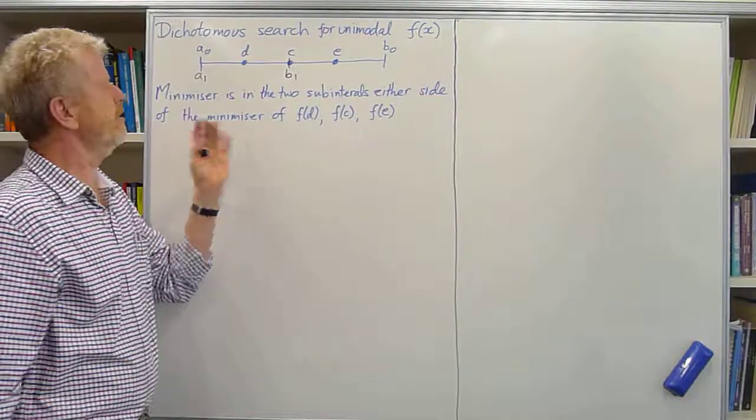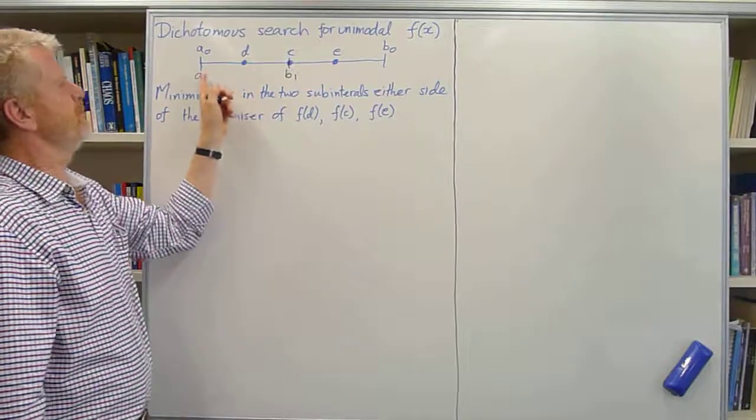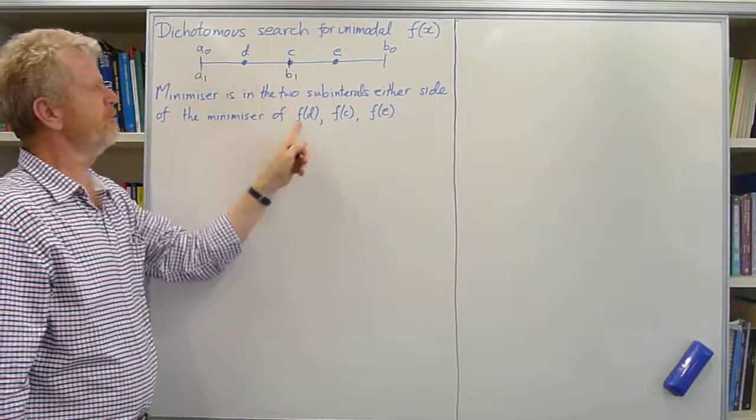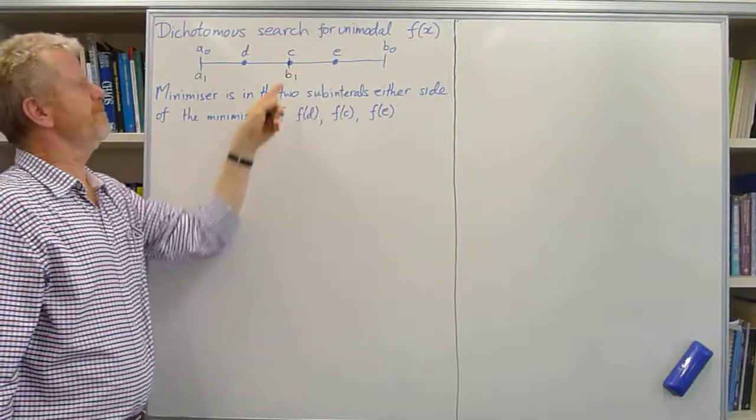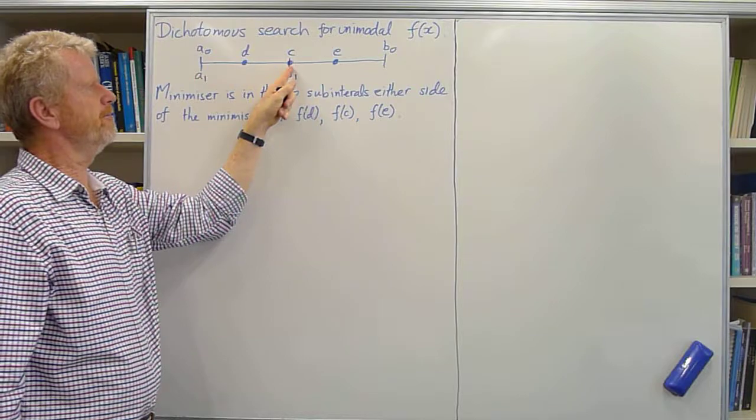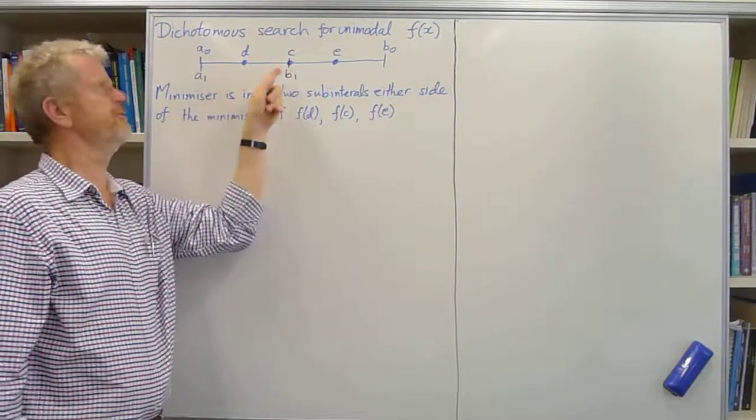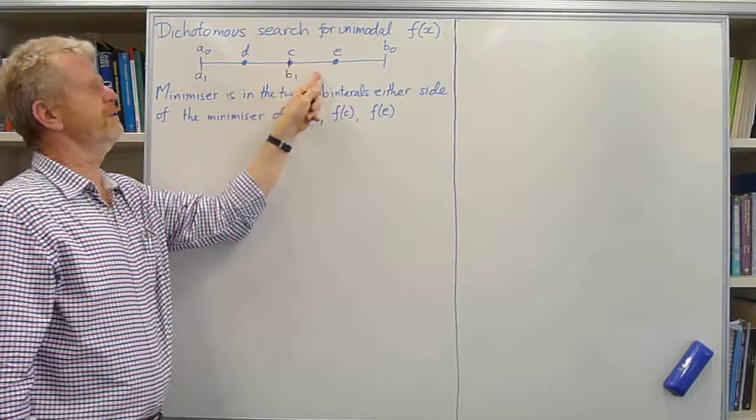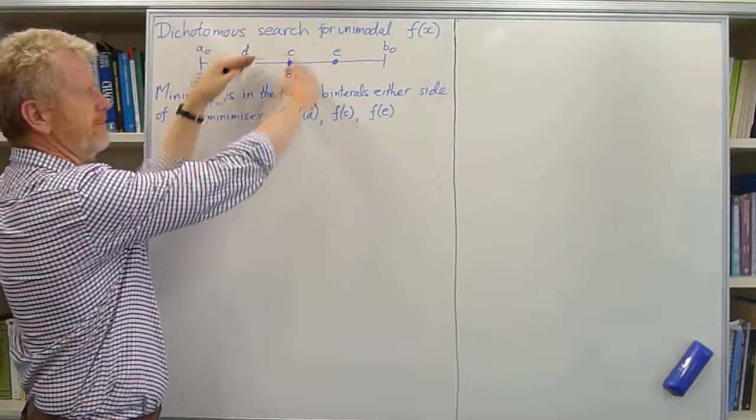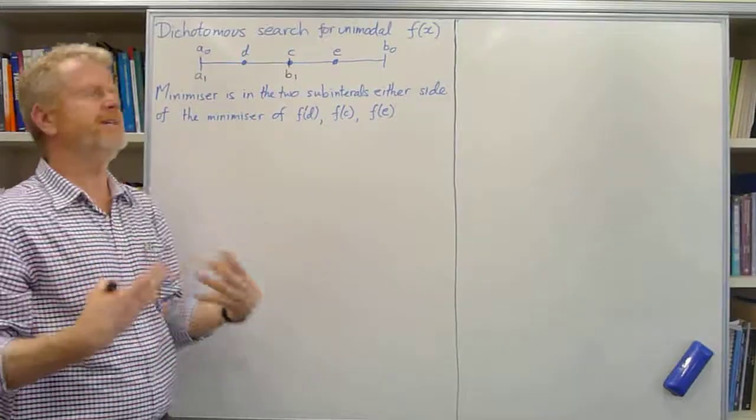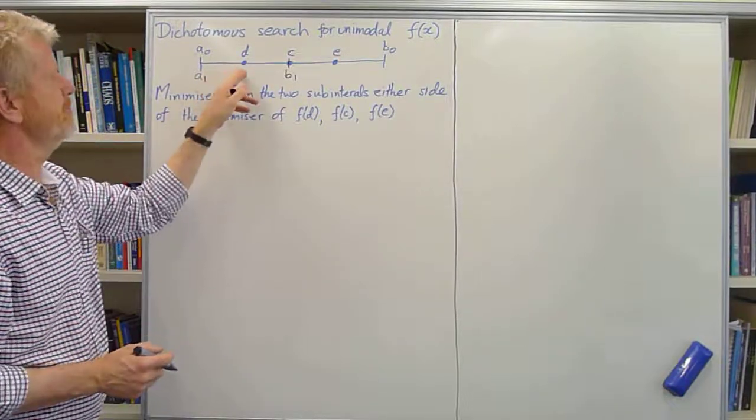And the reason that follows is by contradiction. Suppose the minimum is the smallest one of those three values, but the minimum is over here. What that means is when you look at the function either side of c, since f of d is less than f of c, the function goes down towards d. And if the minimum is over here, then it must go down this way from c. So the function value is going down, which means it's not unimodal. So the minimum must be in there if that's the minimum.